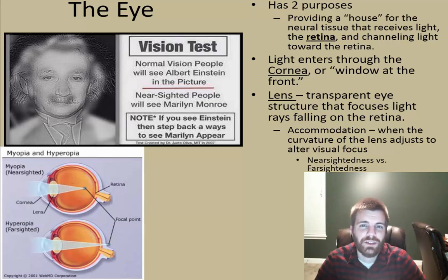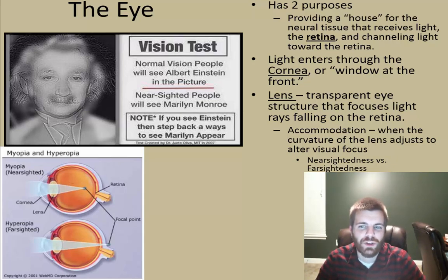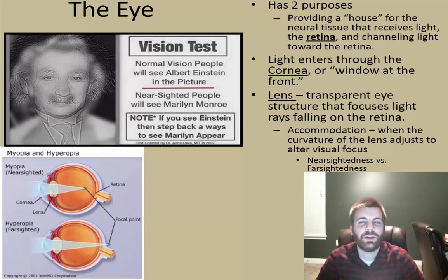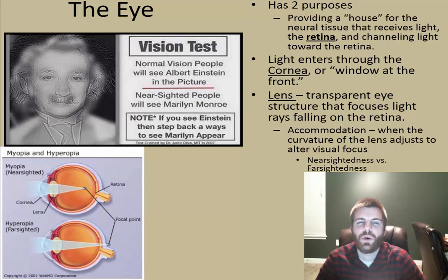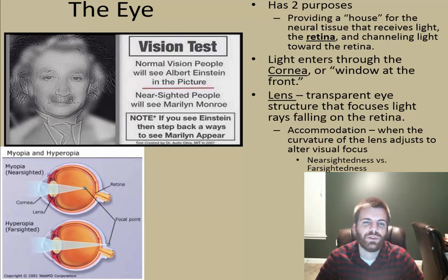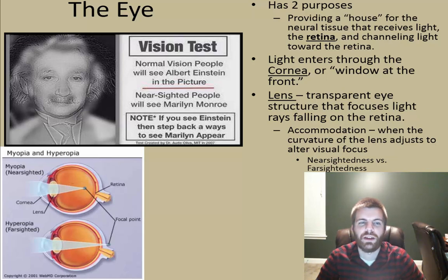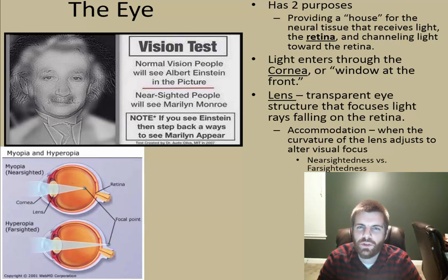The process that the lens undergoes is known as accommodation — when the lens actually adjusts or curves itself to alter visual focus. Some of you may be nearsighted or farsighted. A normal person looking at this image will see Albert Einstein, however a nearsighted person will see Marilyn Monroe. If you want to see how that works, just distance yourself a bit and you should see it change. The lens adjusts itself through accommodation to help focus light on the retina.